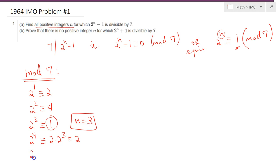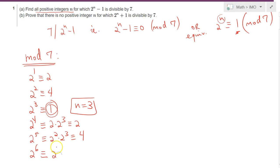2 to the fifth power is 2 squared times 2 cubed. Recall that 2 cubed is 1, but 2 squared is 4, so that makes 4. 2 to the sixth power is 2 cubed squared, which is 1 squared equals 1, so n equals 6 works as well.